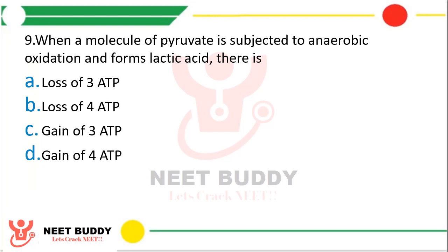Question 9: When a molecule of pyruvate is subjected to anaerobic oxidation and forms lactic acid, there is — option A loss of 3 ATP, option B loss of 4 ATP, option C gain of 3 ATP, or option D gain of 4 ATP. The correct answer is option A — loss of 3 ATP. When pyruvic acid is converted to lactic acid, one molecule of NADH·H⁺ is converted to NAD⁺. Since one NADH₂ is equivalent to 3 ATP, using it up represents a loss of 3 ATP.